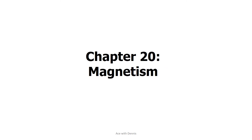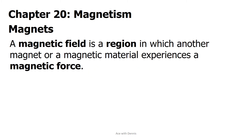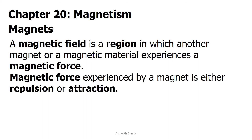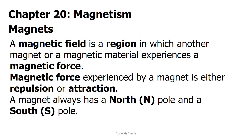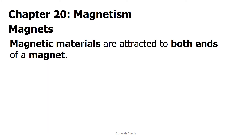Chapter 20: Magnetism. A magnetic field is a region in which another magnet or a magnetic material experiences a magnetic force. Magnetic force experienced by a magnet is either repulsion or attraction. A magnet always has a north pole (N) and a south pole (S). The magnetic field is strongest at the poles. Magnetic materials are attracted to both ends of a magnet.